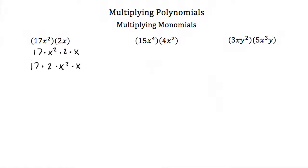17 times 2 is just 34, and x squared times x — remember, x squared is x times x — so we have x times x times x, or x cubed. So these two monomials together equal 34x cubed.